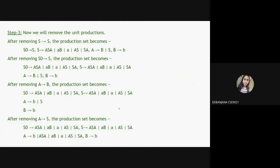Step three: remove all unit productions. The unit productions are S → S, S' → S, A → B, and A → S. For S → S we simply ignore it and rewrite the rule without it. After removing S' → S, the production set becomes S' → aSa | ab | A | aS | Sa. Then we remove A → B by substituting B's value (B → b), and remove A → S by substituting the value of S.